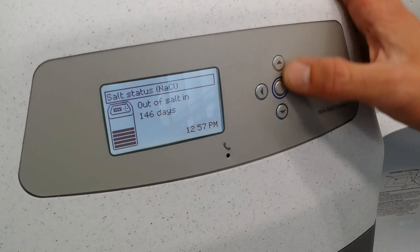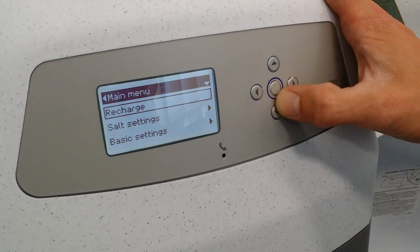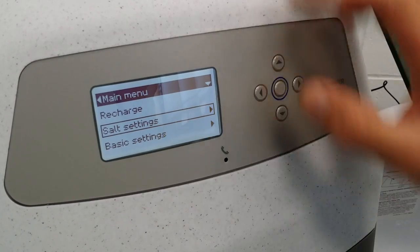You're going to go over to the controller on the water softener, press the center button, and then you'll see one arrow down you have salt settings.